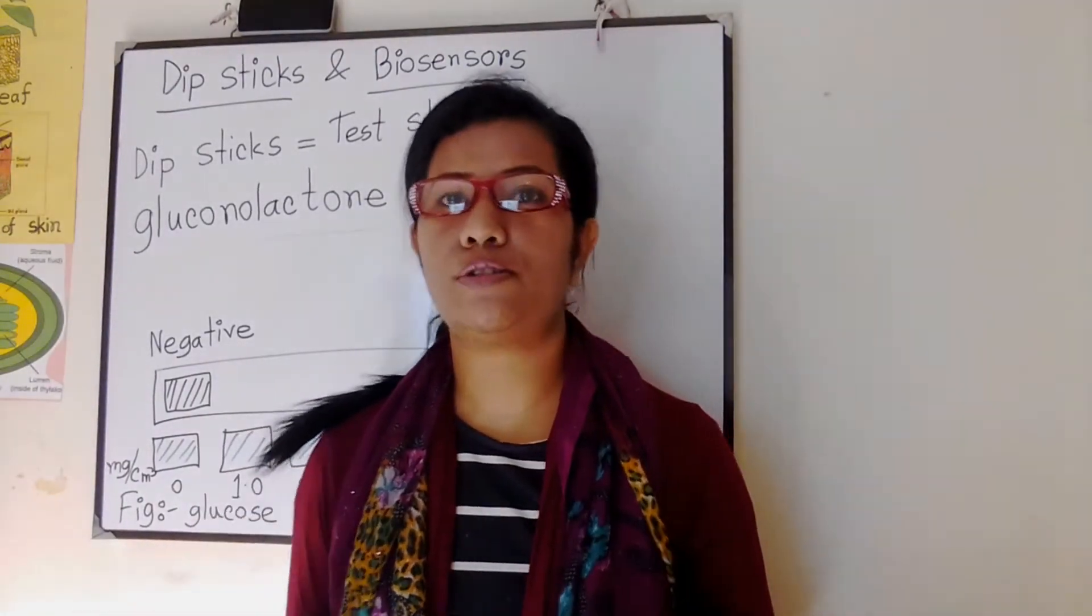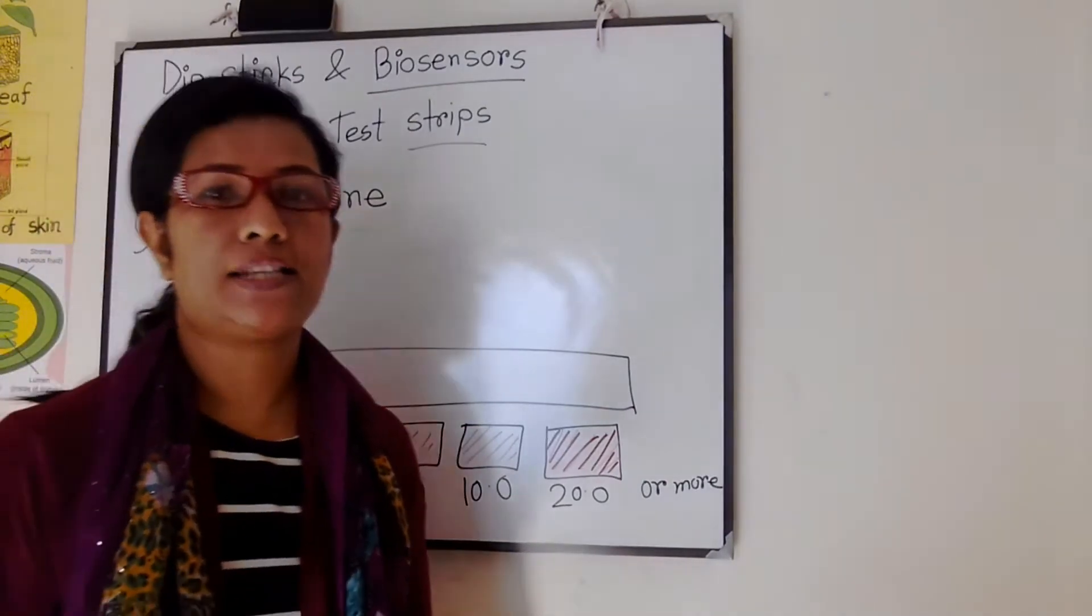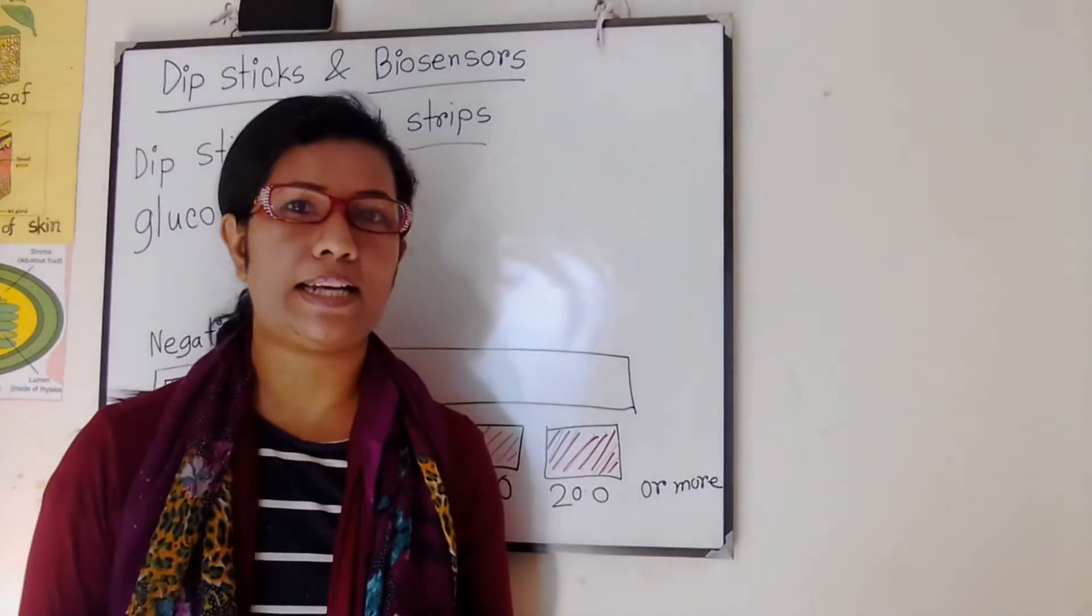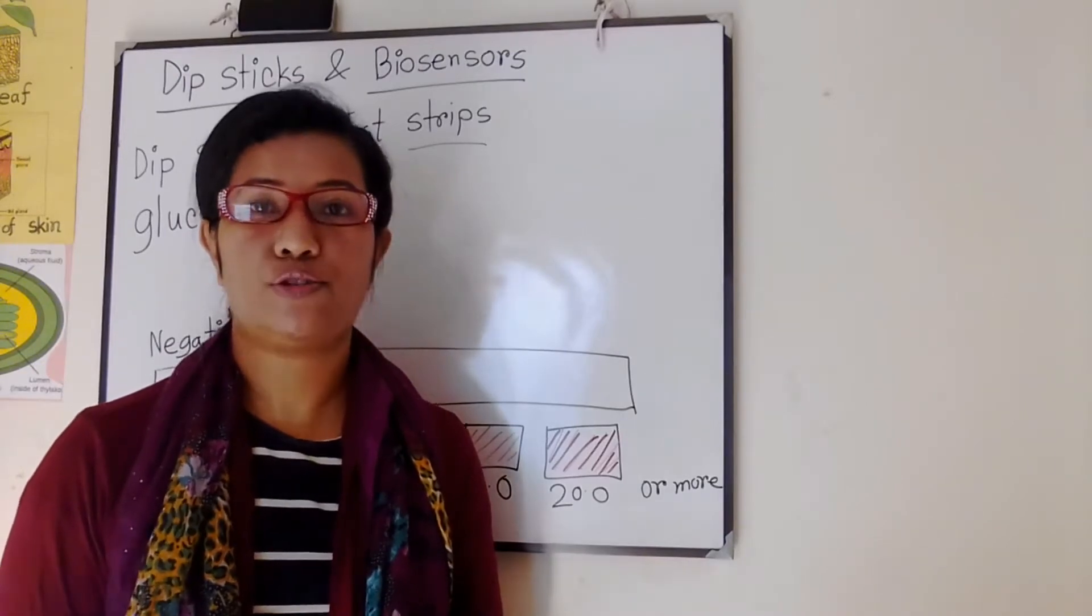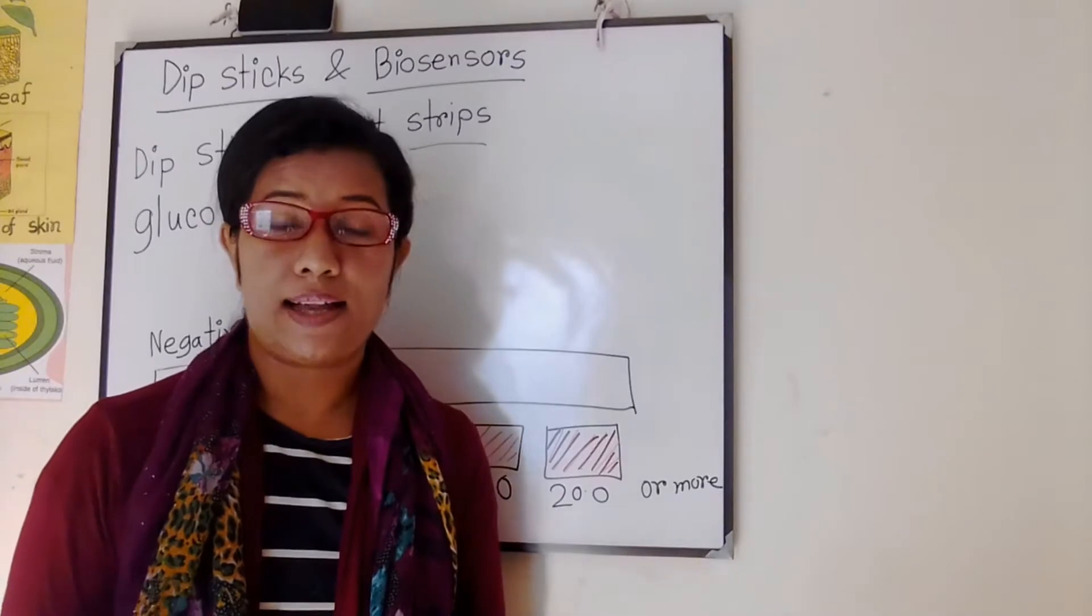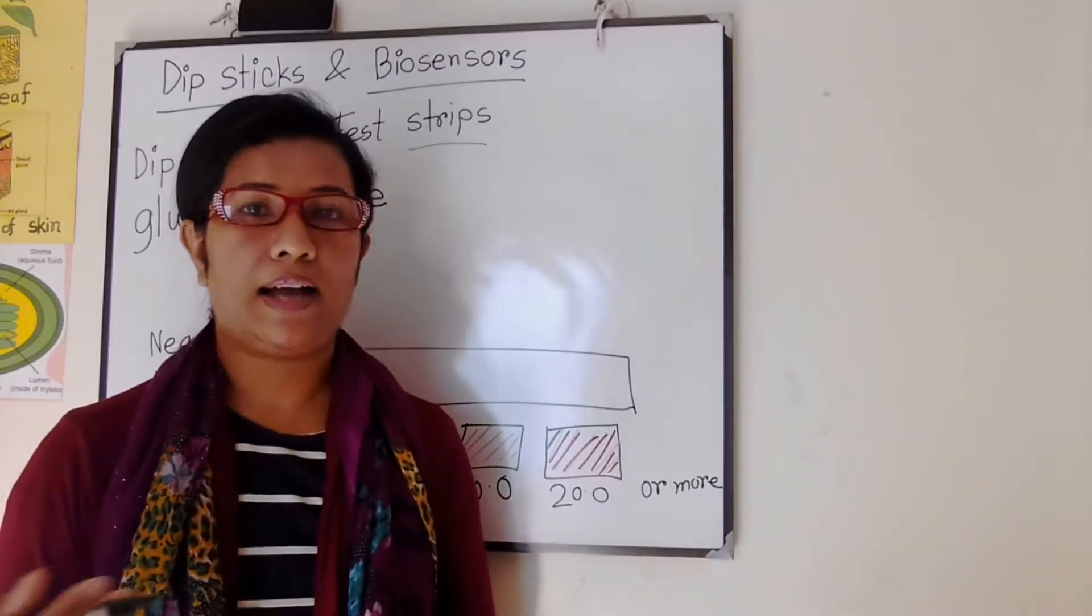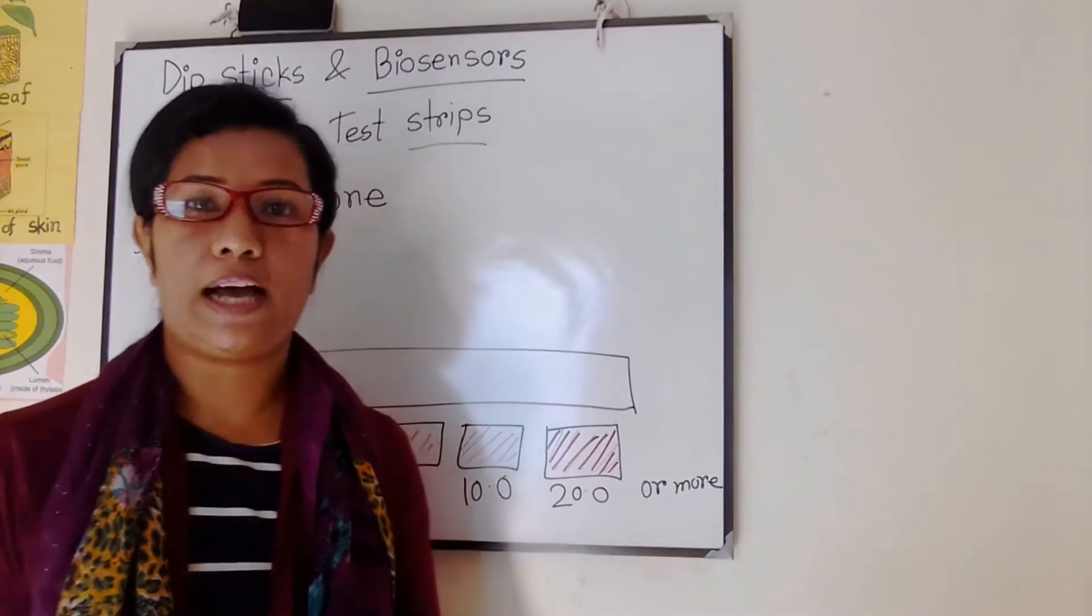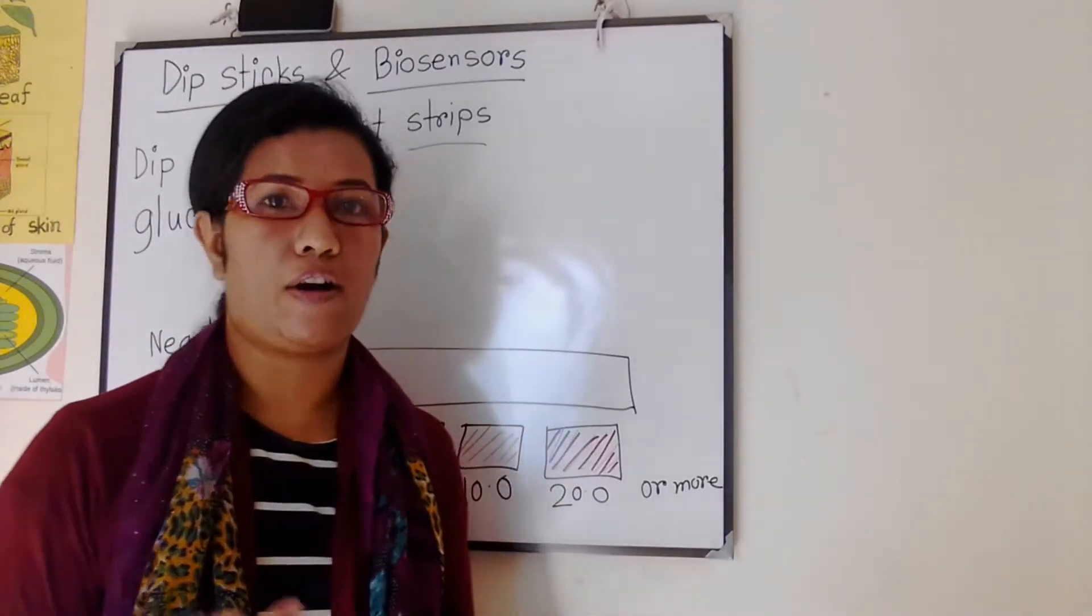Hydrogen peroxide is also produced. Peroxidase catalyzes a reaction between hydrogen peroxide and a colorless chemical in the pad to form a brown compound. The resulting color of the pad is matched against a color chart. The chart shows the colors that indicate different concentrations of glucose.